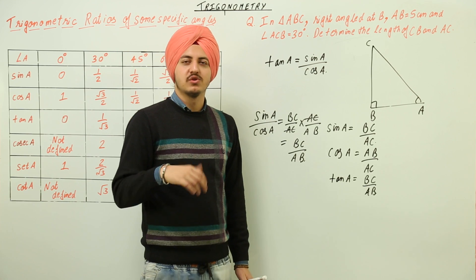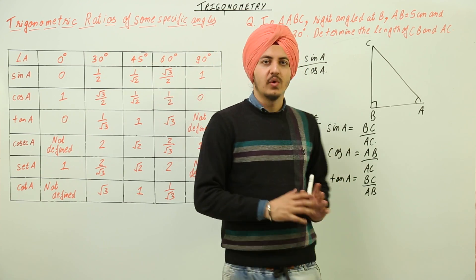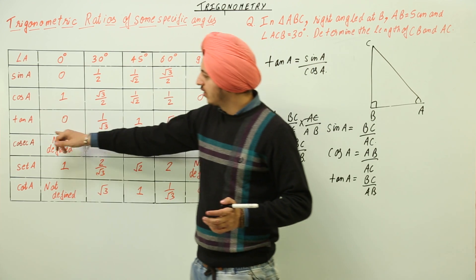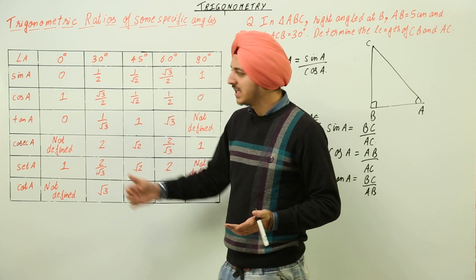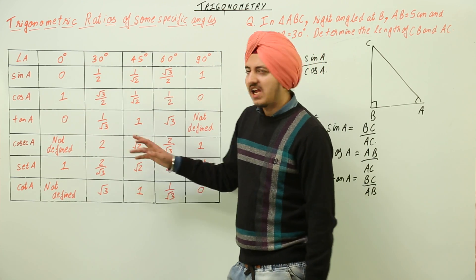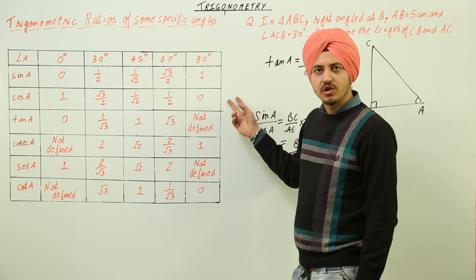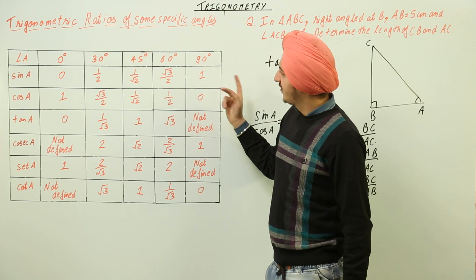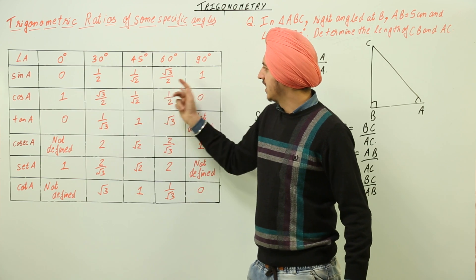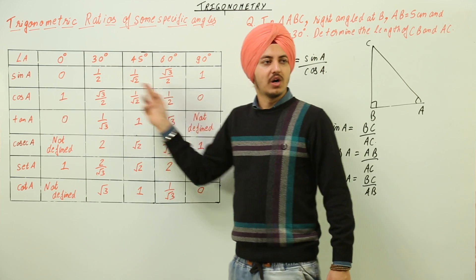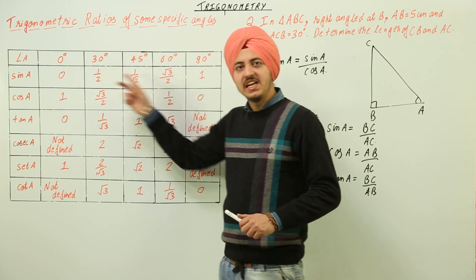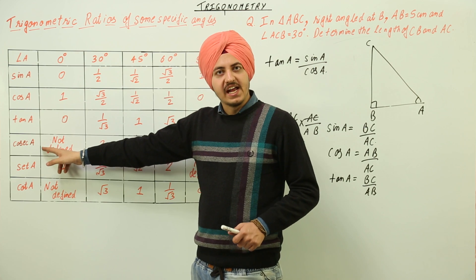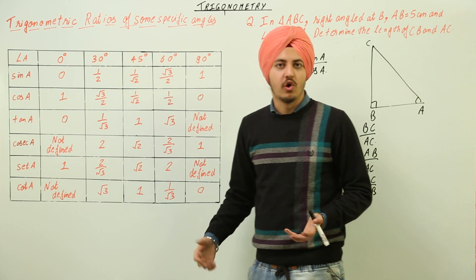So tan A is always equal to sin A divided by cos A. This helps you construct the table yourself in an examination. To find the values of tan A, you just divide the values of sin A by cos A. You only need to remember the values of sin A, because the values of cos A are just the reverse order. Then dividing sin A by cos A gives you tan A. Cosecant A is 1 divided by sin A, the reciprocal of sin A.